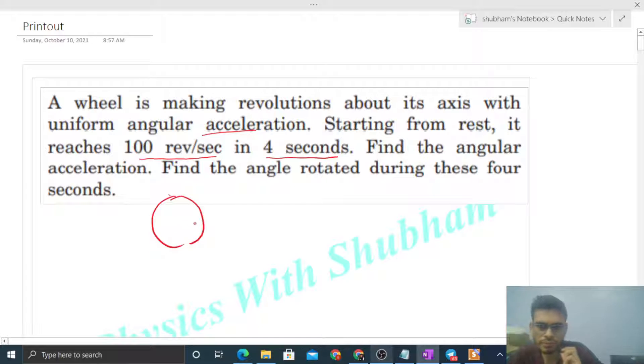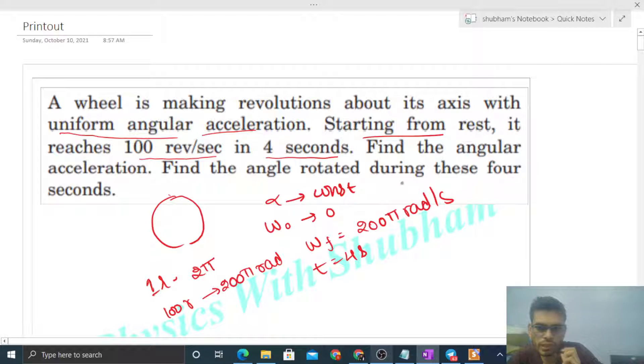There is a wheel with an axis of revolution, and it is given that it is moving with uniform angular acceleration, so alpha will be constant. Starting from rest means initial angular velocity will be zero. It reaches 100 revolutions per second - one revolution means 2π radians, so 100 revolutions means 200π radians. So final omega will be 200π radians per second, and time is 4 seconds.